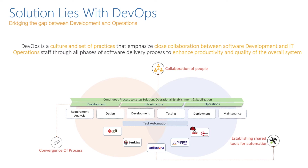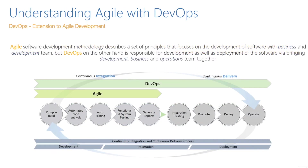DevOps also works very closely with agile. DevOps is nothing but an extension to agile development processes. Agile software development methodology describes a set of principles focusing on development with business and development teams, but DevOps is responsible for development as well as deployment — CI as well as CD — by bringing development, business, and operations teams together.